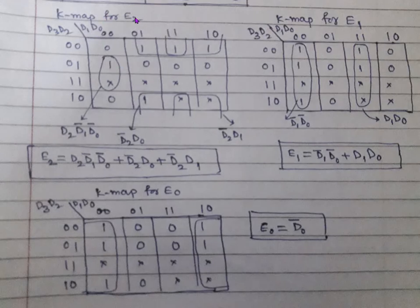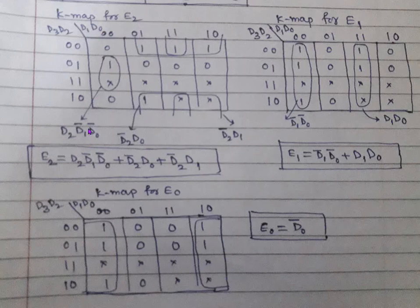Now for the KMAP for E2: fill up the KMAP from the truth table and make effective groupings. For one group, D3 doesn't come, D2 is 1, and D1, D0 are both 0, giving term D2·D1̄·D0̄. Write down the term for each group to obtain the reduced expression for E2.